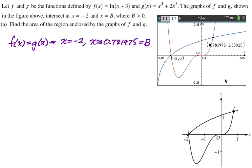So here's the work for that. f(x) equals g(x) gives negative 2 and approximately 0.781975 equals b, and now I'm just going to refer to b throughout, because I've already defined it. So to do area, I just have to do top, take away, bottom on the interval.